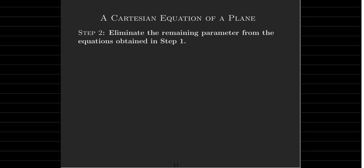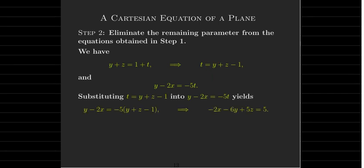The next step is to eliminate the remaining parameter t. Our two new equations are y plus z equals 1 plus t, and y minus 2x equals negative 5t. We solve the first for t and substitute into the second equation. After simplifying, we get the Cartesian equation: negative 2x minus 6y plus 5z equals 5.